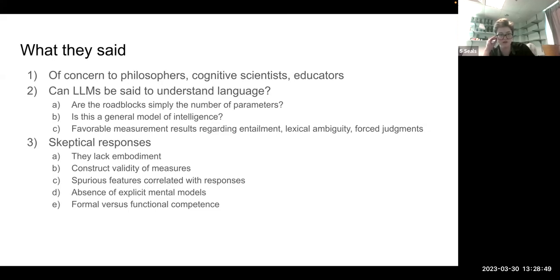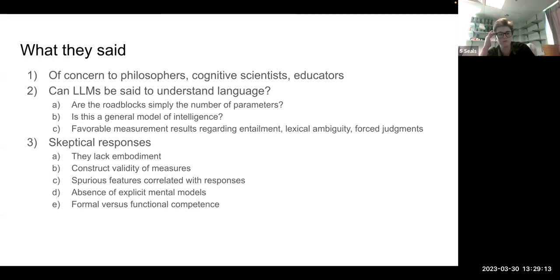On the other side there's a skeptical perspective. People in this camp argue that language models lack embodiment — interaction with the real world. They're concerned about the construct validity of the measures used to assess these models. They point out spurious features correlated with responses, referred to in the paper as shortcut learning. Language models lack explicit mental models that humans engage. There's also a distinction between formal versus functional competence.